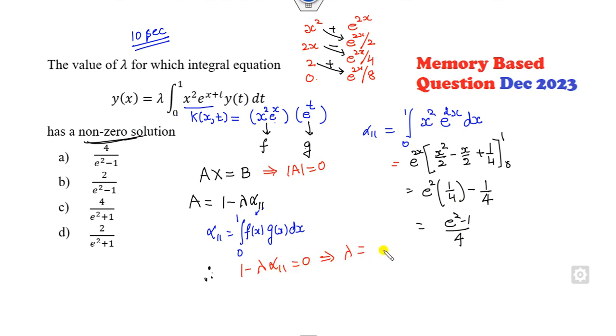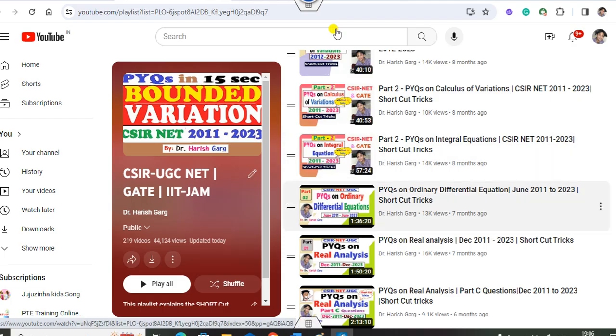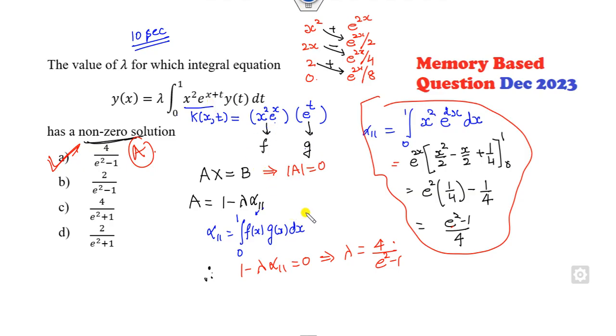So the value of lambda will be 1 over this value, so e squared minus 1 over 4. So that is the right answer of this problem. You can see it's very simple. There is no need to solve this by integration of this. You can simply use this simple approach. Fine, for more detail about this, you can simply watch my previous lectures on this integral equation. You can learn many shortcut tricks about here.